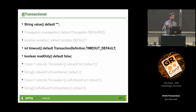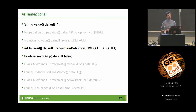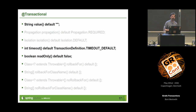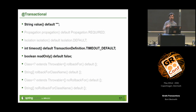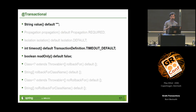Other annotation attributes include 'value', which is the name of the transaction manager — useful if you have multiple data sources. You can set a timeout so that if a transaction takes too long, it throws an exception and rolls back. You can also have read-only transactions, which are somewhat rare but can provide optimizations, especially for Hibernate — it won't do some work it would otherwise do, making things a bit more performant.